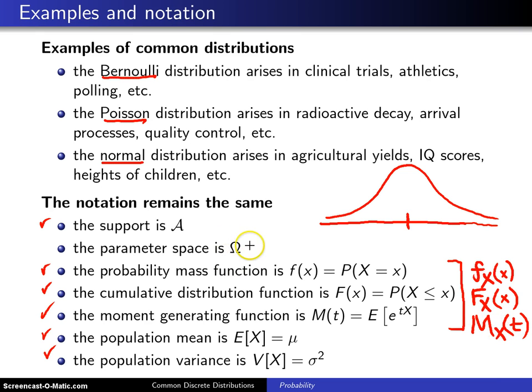The only piece of new notation we have here is known as the parameter space. Parameters will start appearing in these distributions, and those parameters are out there to make the distributions more general. Those parameters are allowed to take on certain values, and the range of those particular values are going to be given by the set omega. That's the only new piece of notation that will show up in this chapter.